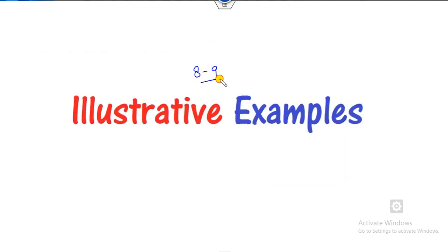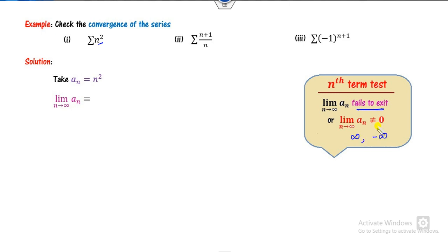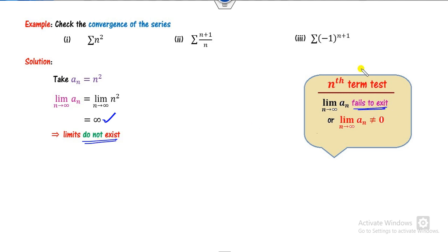We will explain eight to nine examples so you can understand well. For the first case, take A_n equal to n². The target is to calculate the limit as n approaches infinity and check whether it fails to exist. The limit of n² is infinity, so the limit does not exist. Hence, by the nth term test, we can say this series is divergent.